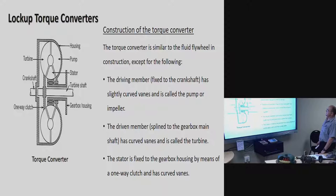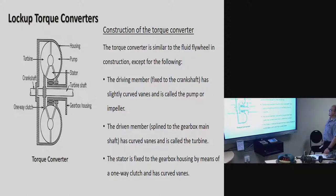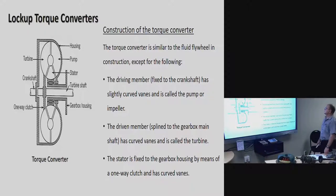Looking at a diagram of the lock-up torque converter: on the left-hand side you can see the crankshaft coming from the engine. In the middle is the stator — that red piece. The shaft coming out of the turbine goes to the gearbox. The pump — also known as the driving member — is on the upper right side of the drawing. The turbine is the driven member. The stator in the middle changes the direction of the oil flow and causes more force to come out.